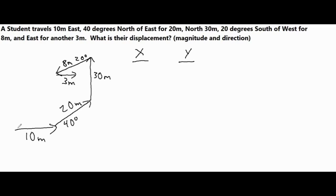Looking at our vectors, we have one horizontal vector and another horizontal one, one completely vertical component, and then two that are angled. For the angled components, we want to break each one up into its x and y components by creating a right triangle out of it. Let's start with the first angled vector.